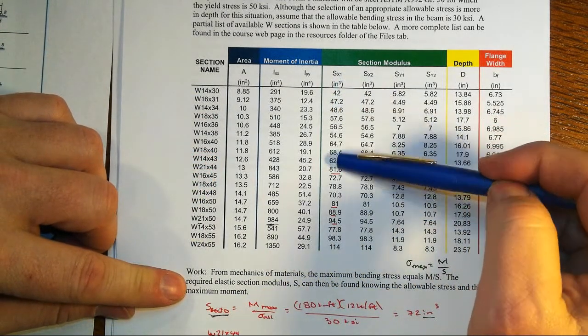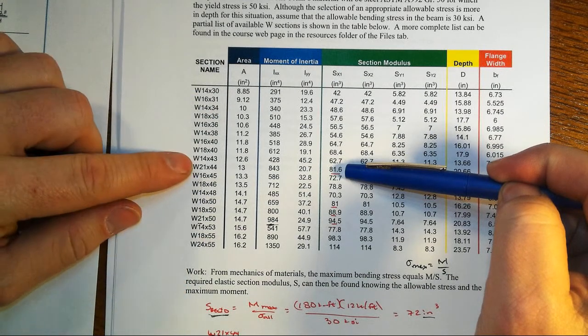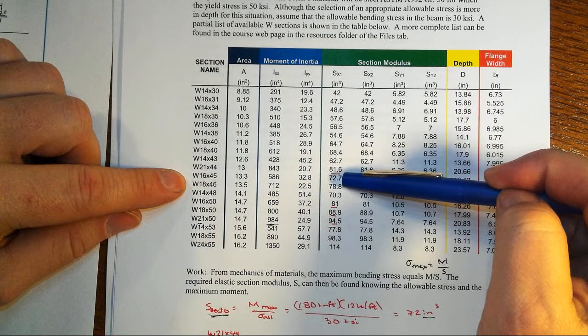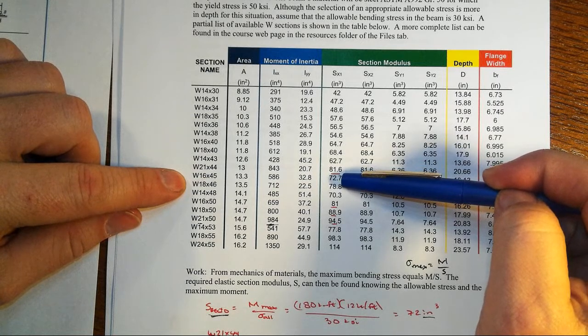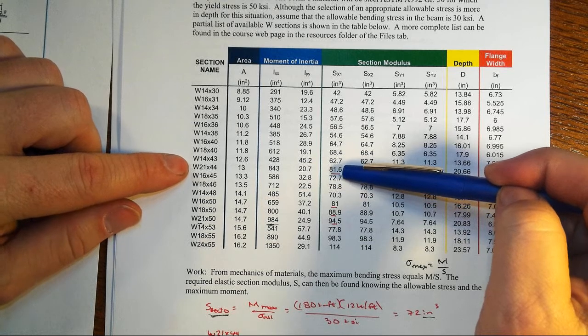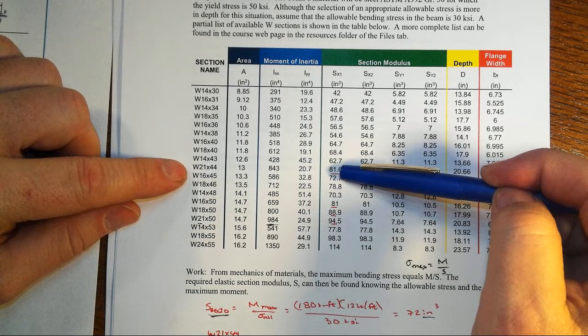Come over here to the section modulus and we find out that the first one that has at least enough section modulus is 81.6. Now we could choose the 16 by 45. It's going to weigh just slightly heavier and it would be right at the required section modulus. But why not get the biggest, stiffest section we can, get a little extra out of it.